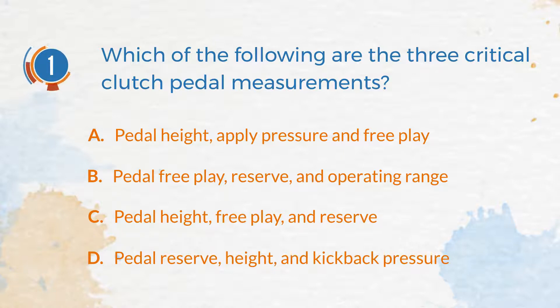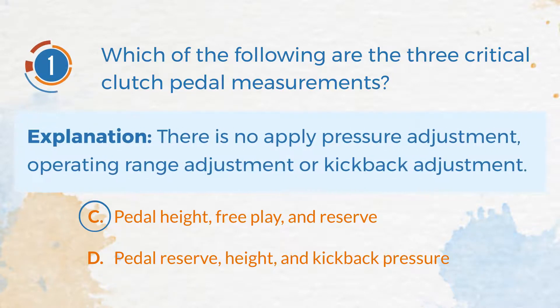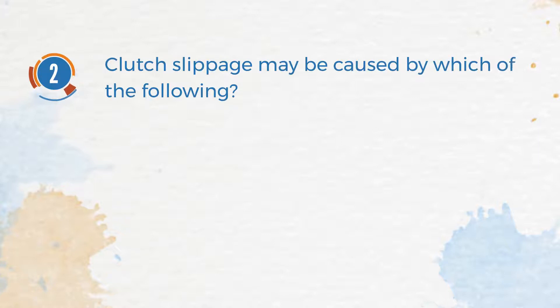The correct answer is C: Pedal Height, Free Play, and Reserve. Explanation: There is no apply pressure adjustment, operating range adjustment, or kickback adjustment. Number 2. Clutch slippage may be caused by which of the following?